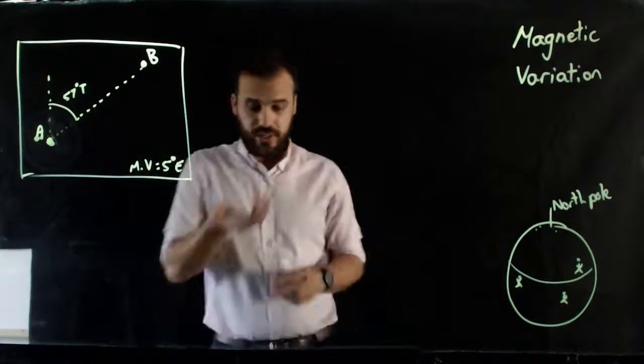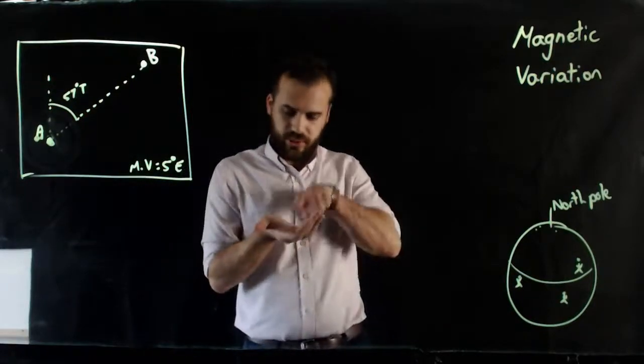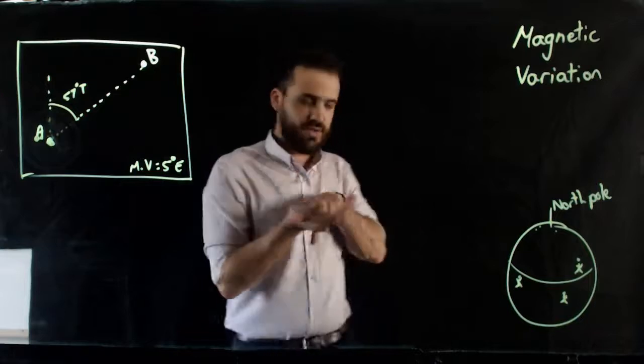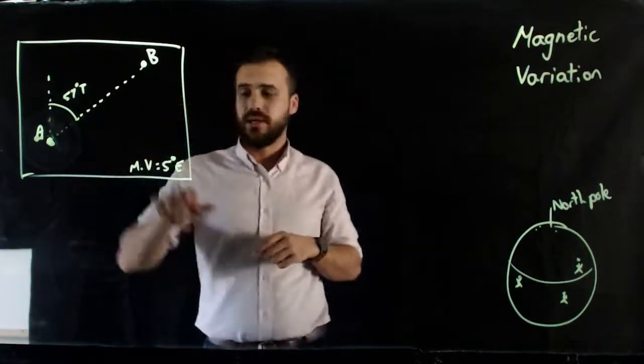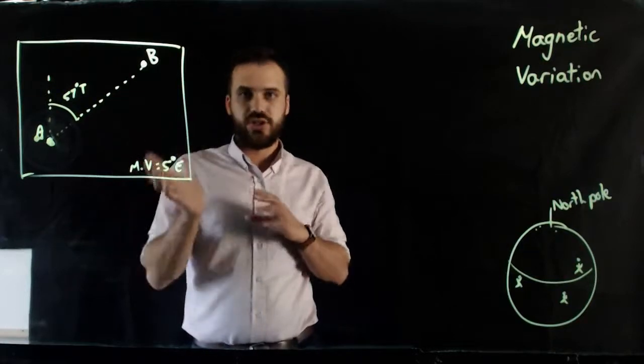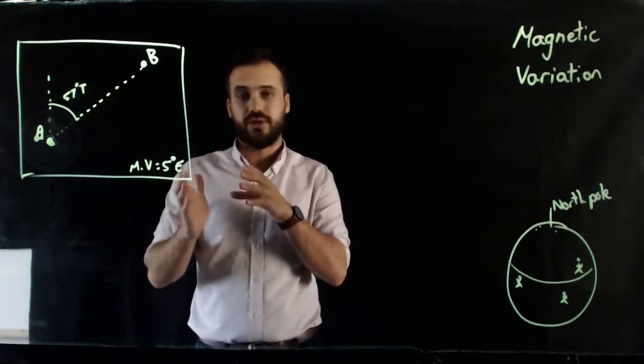Now, if I use a compass, I'm looking at my compass, I'm looking at it pointing north, and then I turn 57 degrees and I start walking, I'm not going to get to point B, because the magnetic variation is wrong. It's wrong by 5 degrees.